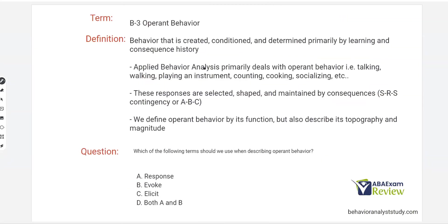Now, on to operant behavior — this is where your primary concern should lie, because throughout the rest of the task list we're talking about operant behavior and operant conditioning. Operant behavior is behavior that is created, conditioned, and determined by learning and consequence history. Consequences control, determine, and create future operant behavior — behavior happens for a reason, it's lawful. Applied behavior analysis primarily deals with operant behavior: things like talking, walking, playing an instrument, counting, cooking, socializing. Unlike reflexes we are born with, these are all learned behaviors. Operant responses are selected, shaped, and maintained by consequences.